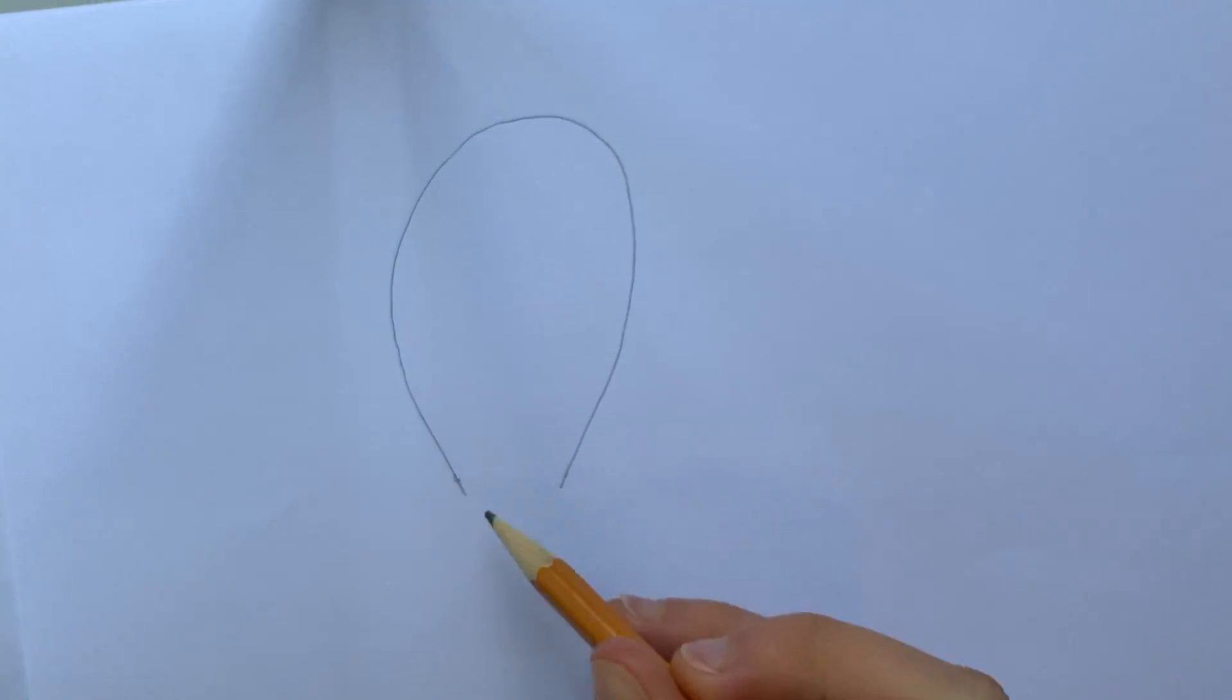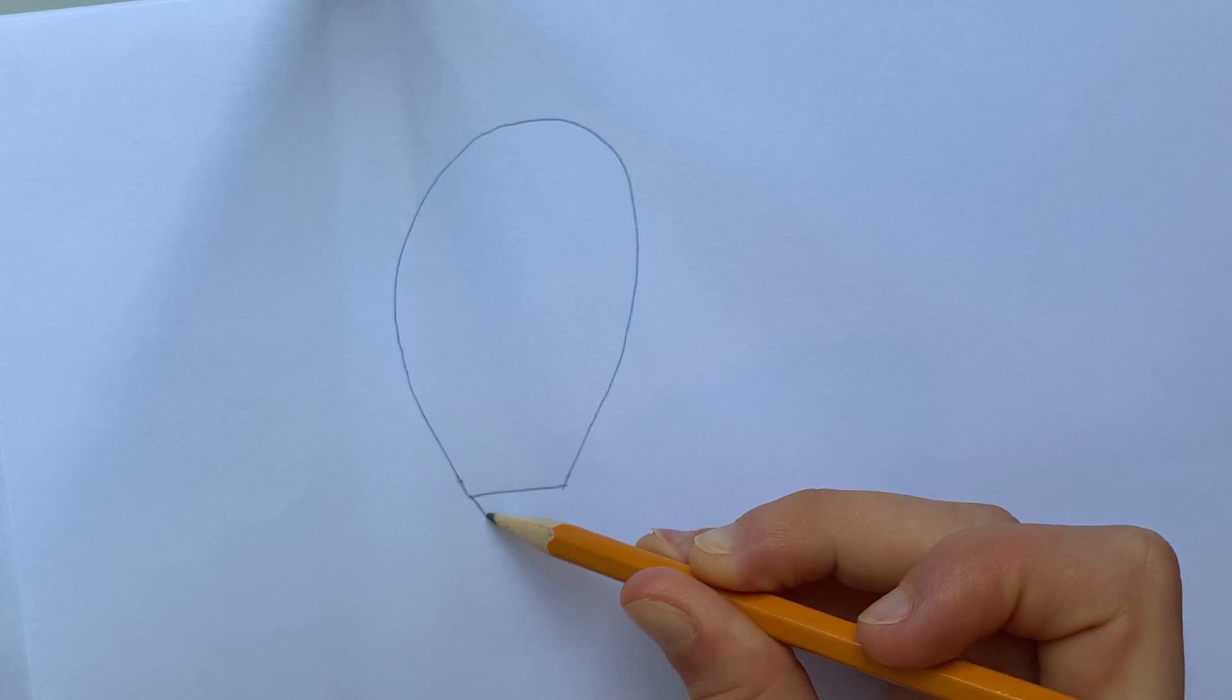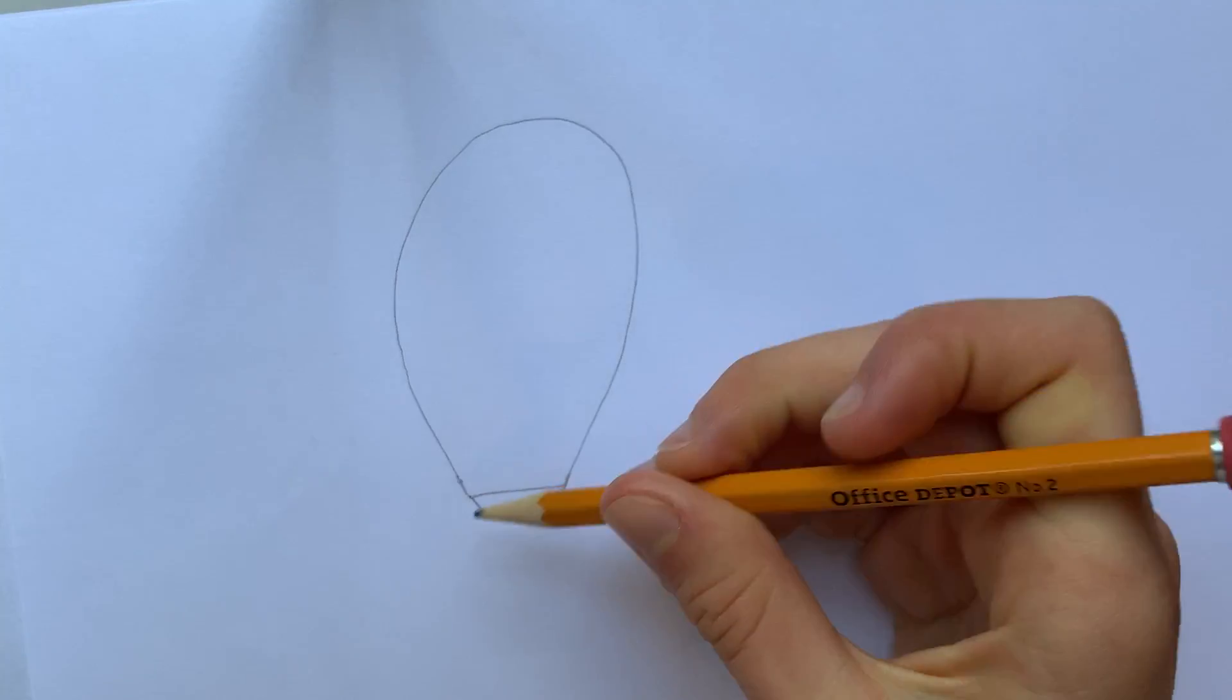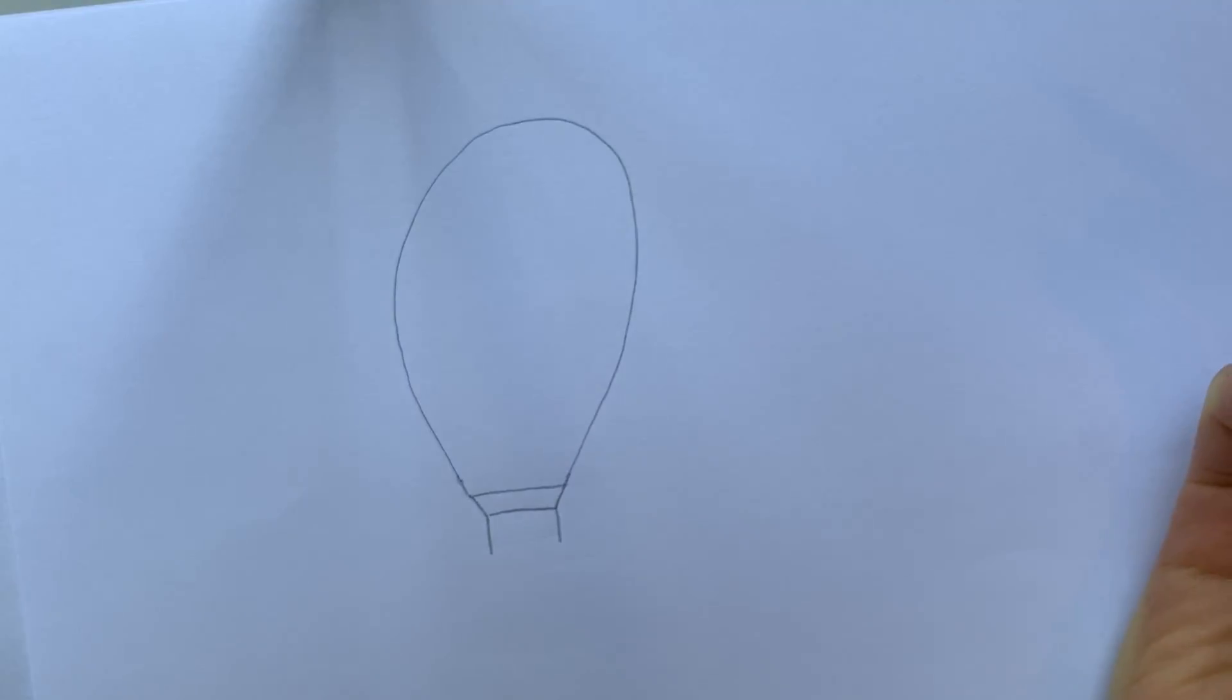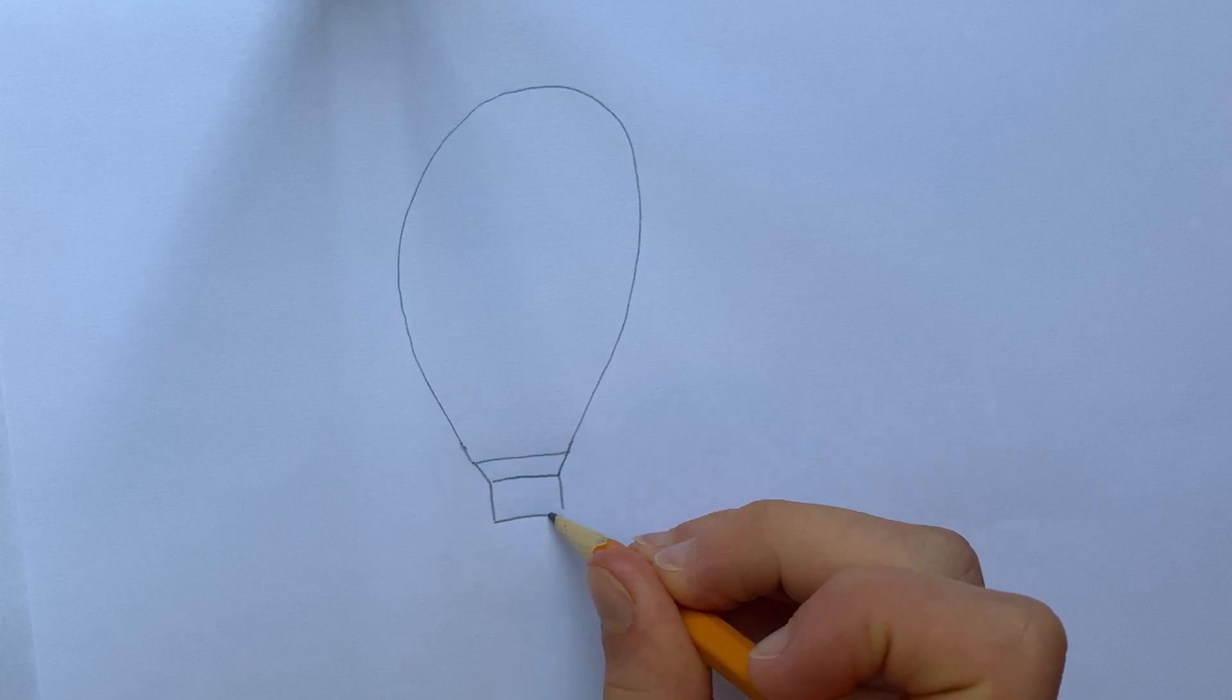It tapers down here, then we're going to do a line across and then continue like this. Then two lines that hang down. So you have that. Then from these lines we're going to do a box. This is going to be like the basket of our hot air balloon.